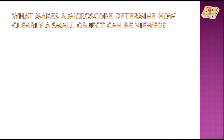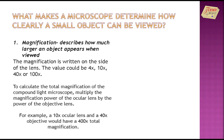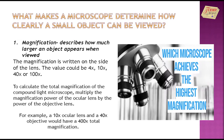The science of investigating small objects and structures using such an instrument is called microscopy. What makes a microscope determine how clearly a small object can be viewed? 1. Magnification — it describes how much larger an object appears when viewed. The magnification is written on the side of the lens. The value could be 4 times, 10 times, 40 times, or 100 times.